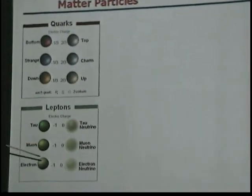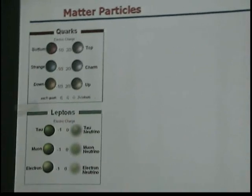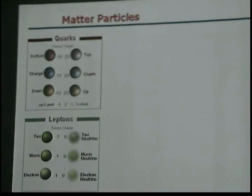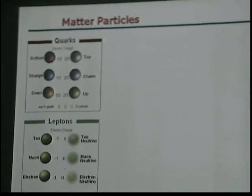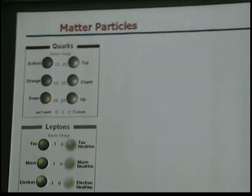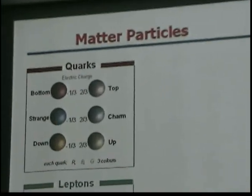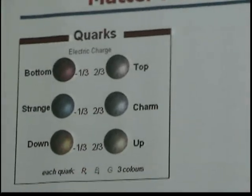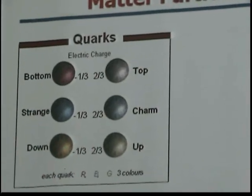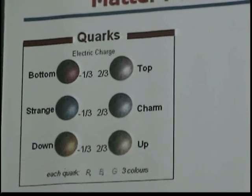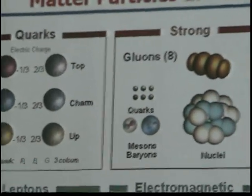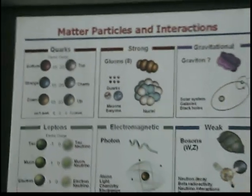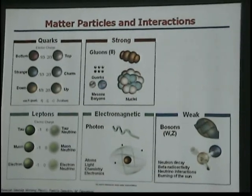These six leptons and six quarks interact through four fundamental interactions: gravity, the electromagnetic force, and the strong and weak nuclear forces. For our purposes, gravity is very weak so we'll ignore it. A simple example: the whole mass of the earth holds you down by gravity, but a small magnet can overcome that. The electromagnetic force is what holds the table together — nothing falls through.